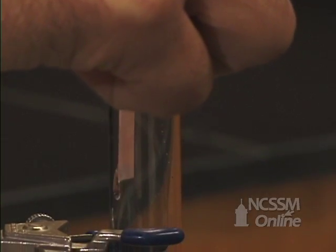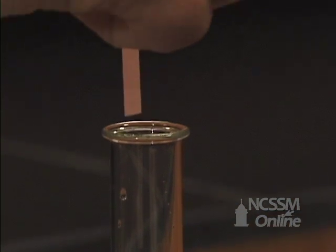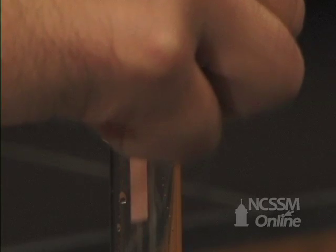The sulfur dioxide dissolves in the water to form sulfurous acid, which turns the blue litmus paper red.